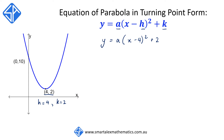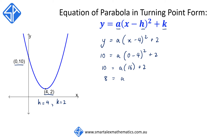In order to find a, we're going to choose another point, (0, 10), and substitute it into the existing equation. So we have 10 = a(0 - 4)² + 2, which gives us 10 = 16a + 2. Subtracting 2 from both sides, we get 8 = 16a, or 16a = 8.